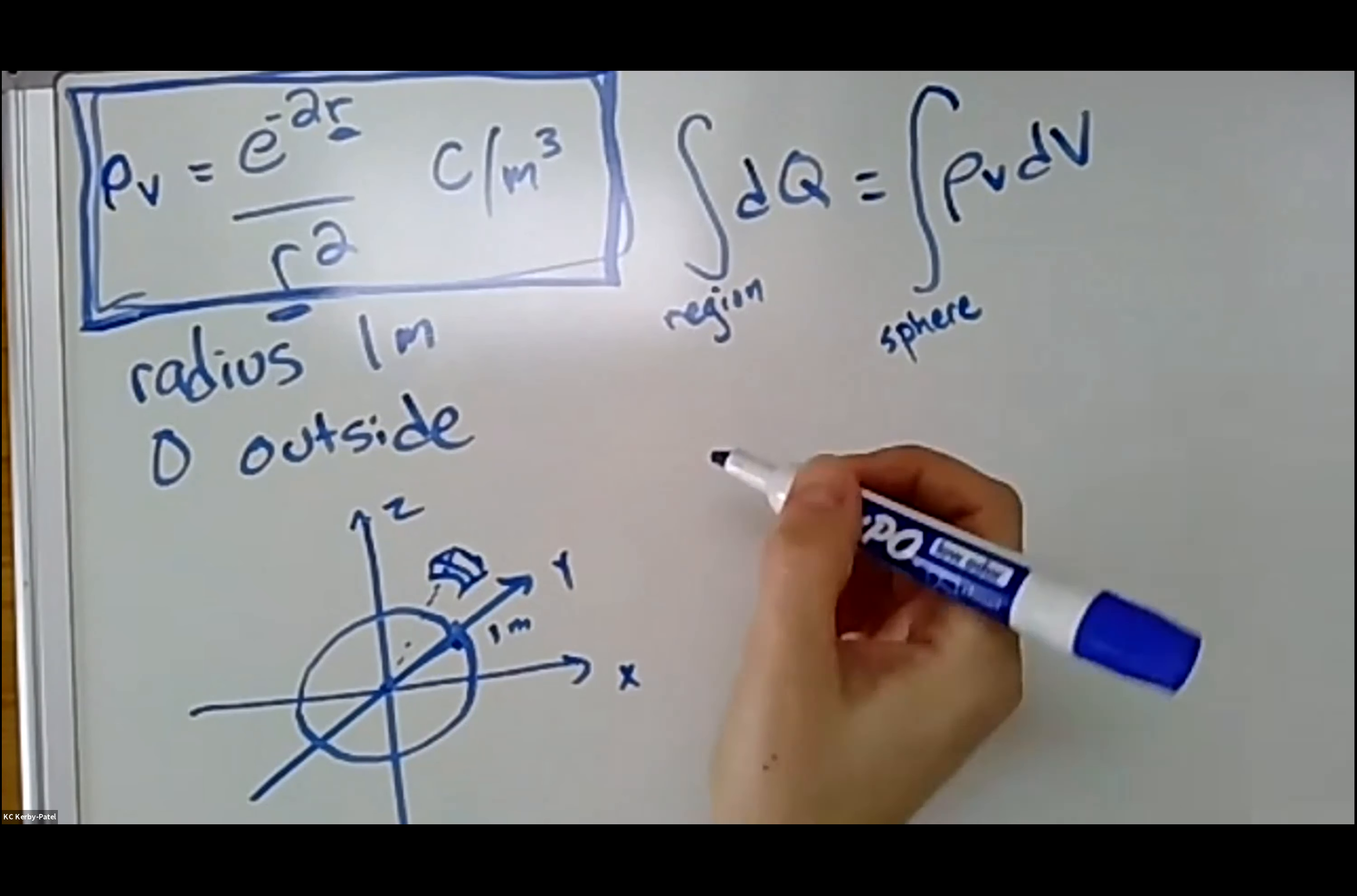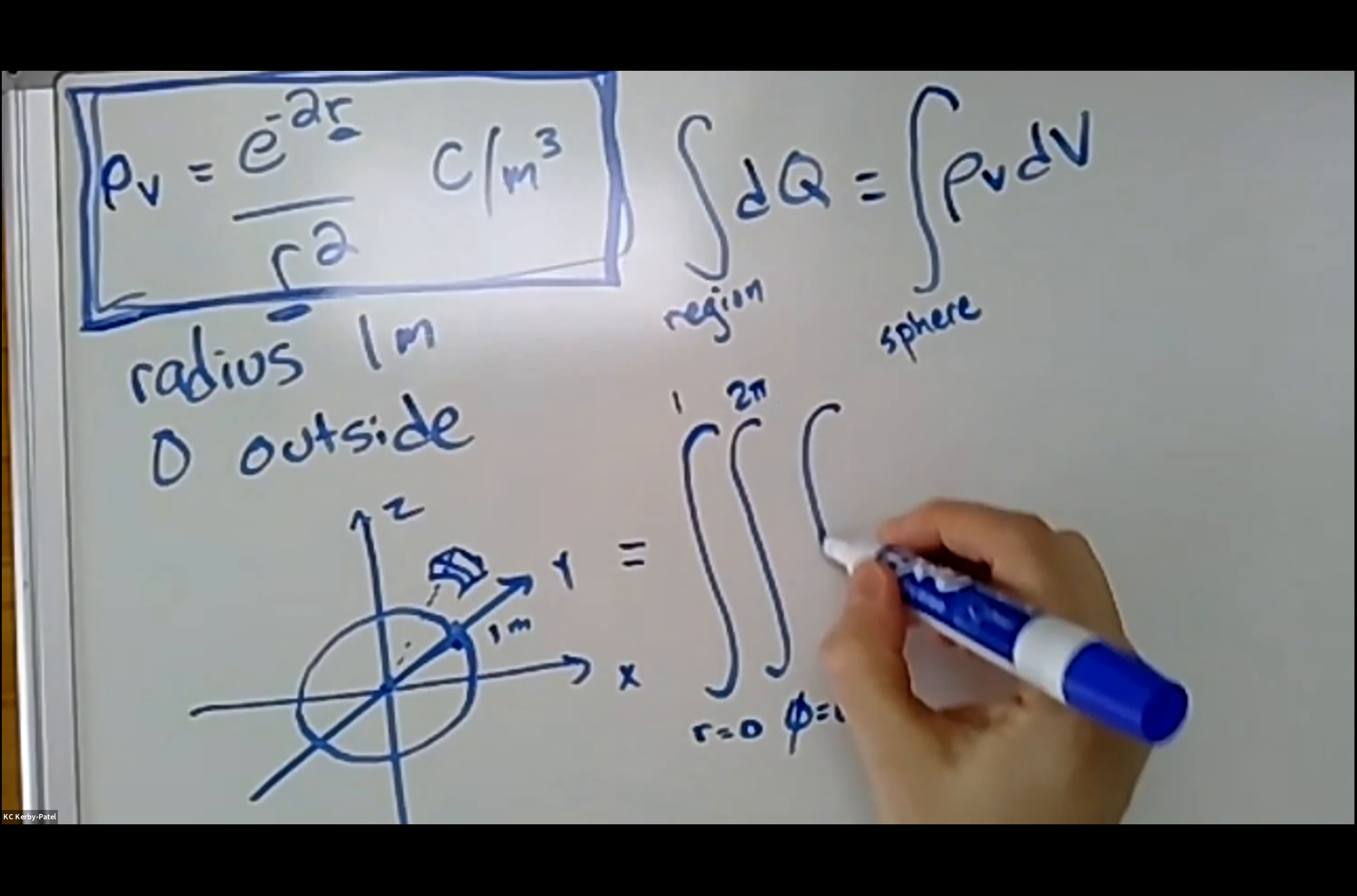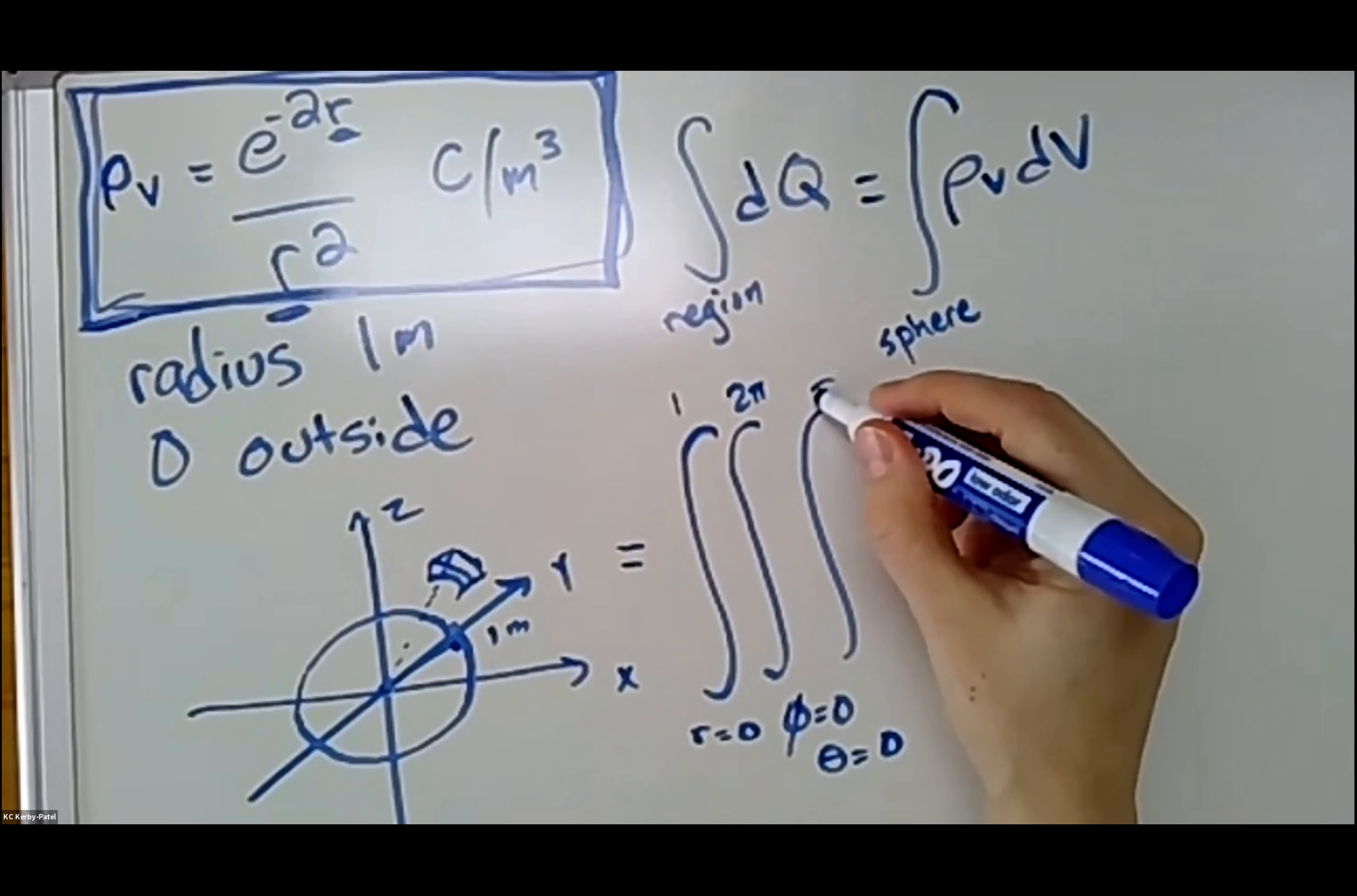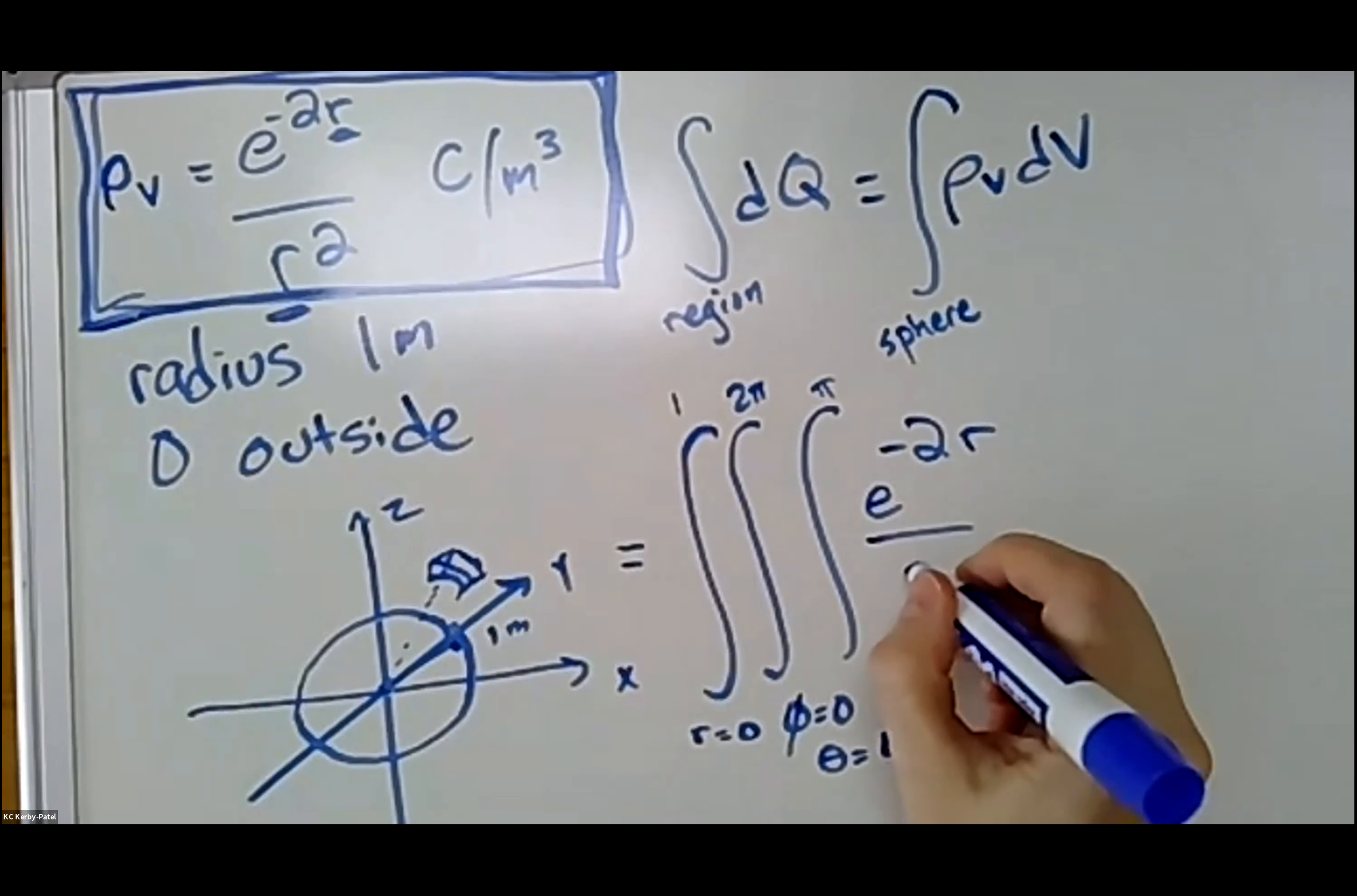And then you end up with a sort of bent little cube like that. So my dV and ρ_v get substituted into this integral, and I can write down that it equals the integral from r equals zero to one, the entire range of phi, so it's going to be phi equals zero to 2π, the entire range of theta, so theta equals zero to π. So far so good.